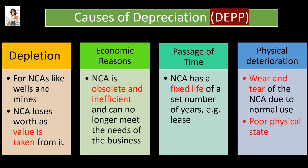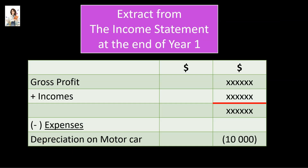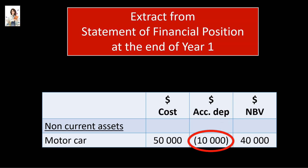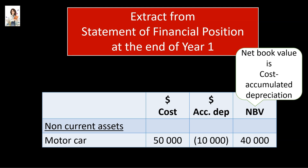Also, if the asset falls into a poor physical state due to rust, rot, decay etc., it will lose value. In the income statement at the end of the year, depreciation of the year — that is $10,000 — will be shown as an expense, which will reduce profit for the year. In the statement of financial position at the end of year 1, the first column will show cost of $50,000, the second column will show accumulated depreciation of $10,000, and the third column will show net book value — which is cost minus accumulated depreciation — that is $50,000 minus $10,000, which is $40,000.